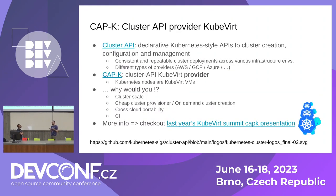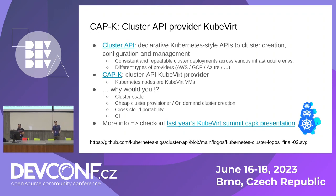Let me introduce the Cluster API Provider KubeVirt project. Cluster API, in their own words, provides a declarative Kubernetes-style API for cluster creation, configuration, and management. All this means that the same thing you can do with Ansible or Terraform or whatever to provision a new cluster, you can use this tool and it will deploy a new Kubernetes cluster for you.